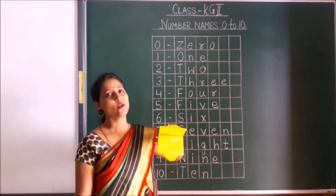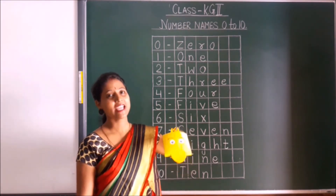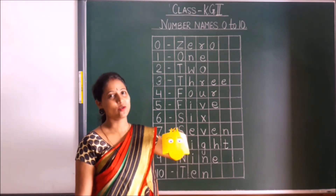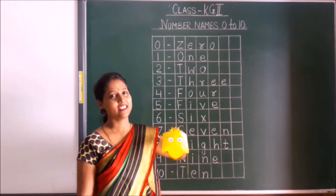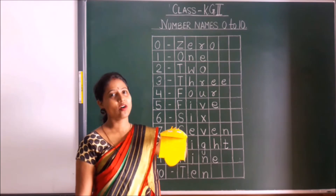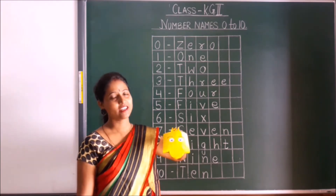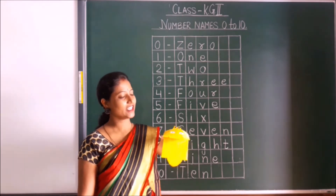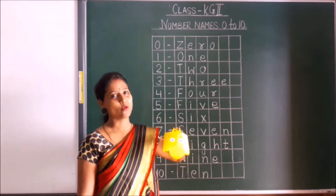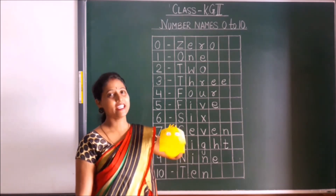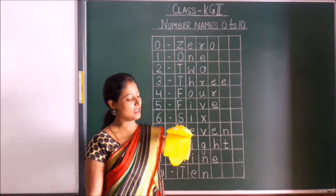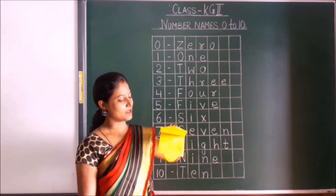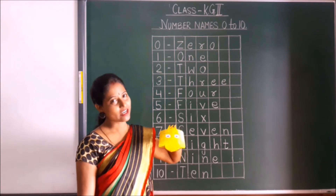Say Z-E-R-O, 0. Z-E-R-O, 0. O-N-E, 1. O-N-E, 1. T-W-O, 2. T-W-O, 2. T-H-R-double-E, 3. T-H-R-double-E, 3.